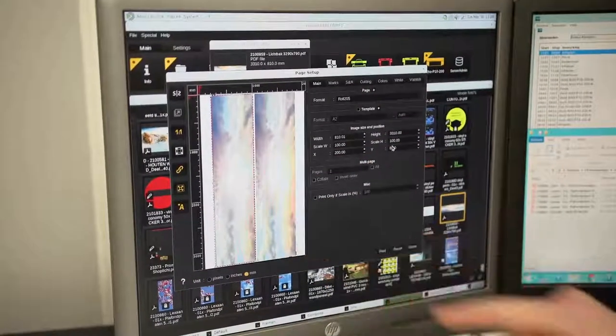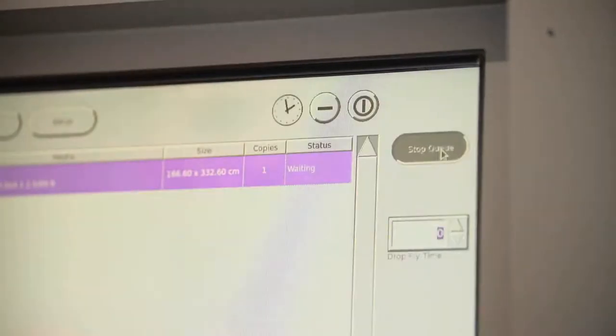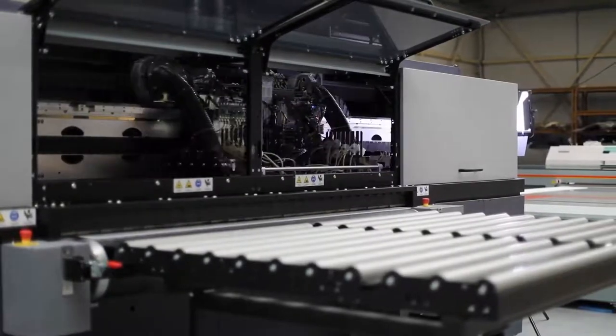There's currently a market shift from screen printing to digital printing where UV digital inks delaminate from polycarbonate film when adhesive is applied on the printed surface.